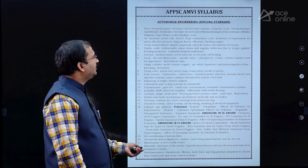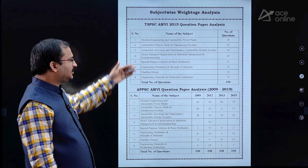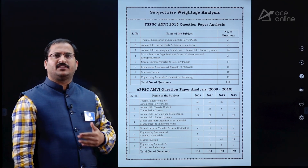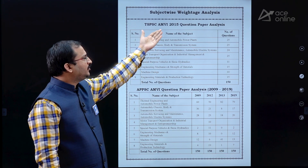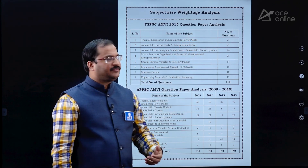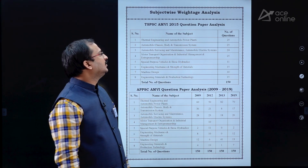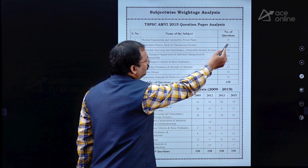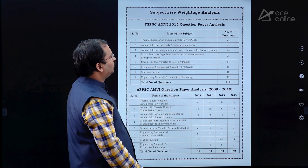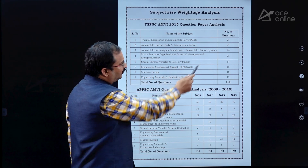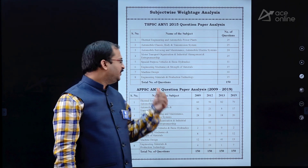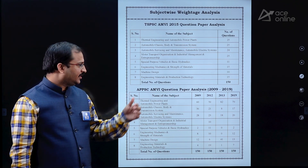The subject weightage analysis for different questions is shown here. For TSPSC AMVI 2015 — the only examination conducted after the formation of Telangana state — the breakdown is: Thermal Engineering and Automobile Power Plants 25 questions, Automobile Chassis Body and Transmission 25, Automobile Servicing and Maintenance 24, Motor Transport Organization 25, Special Purpose Vehicles 11, Engineering Mechanics and Strength of Materials 15, Machine Design 10, and Engineering Materials and Production Technology 15, totalling 150 questions. Multiply each by two to get the marks.